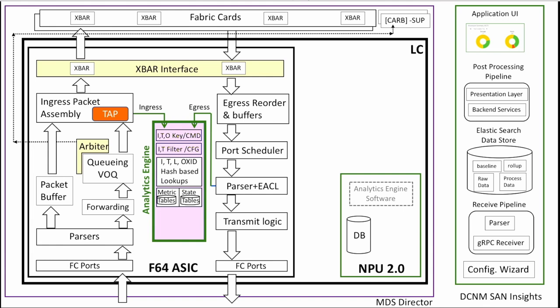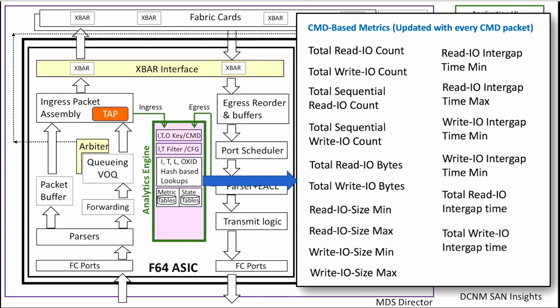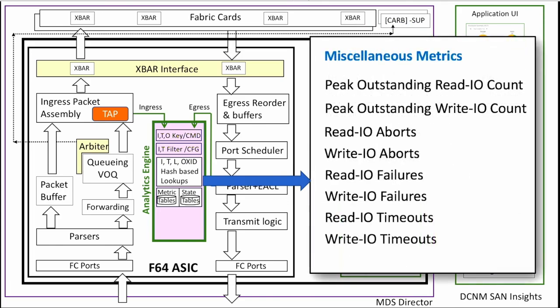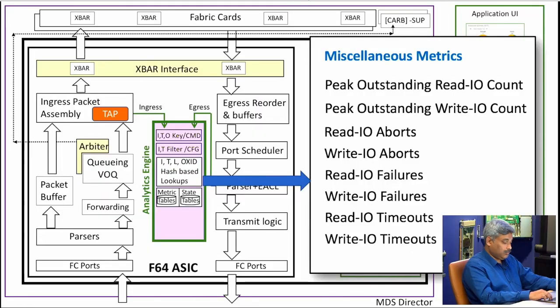There are a whole bunch of metrics available: exchange completion time, initiation time, outstanding IOs, and error conditions — over 70 different metrics can be generated per flow. You can dig deeper at any level to figure out whether your application, such as SAP, has a low response time due to a network problem, an application problem, or a storage problem. This gives you single visibility regardless of storage vendor or application, since you're tapping analytics right on the chip — common to all flows going through it.